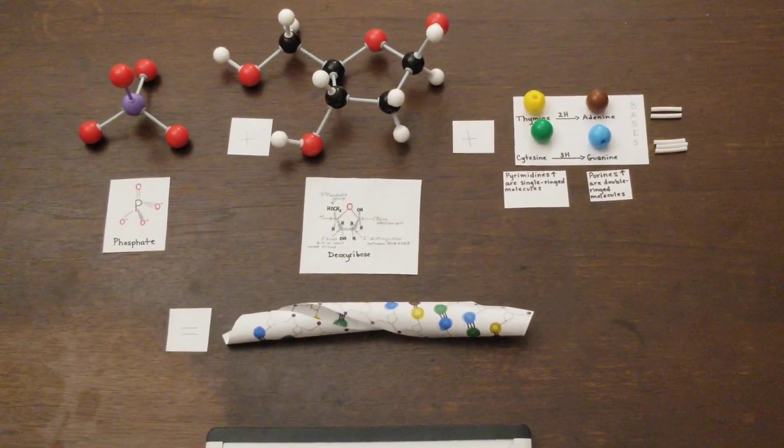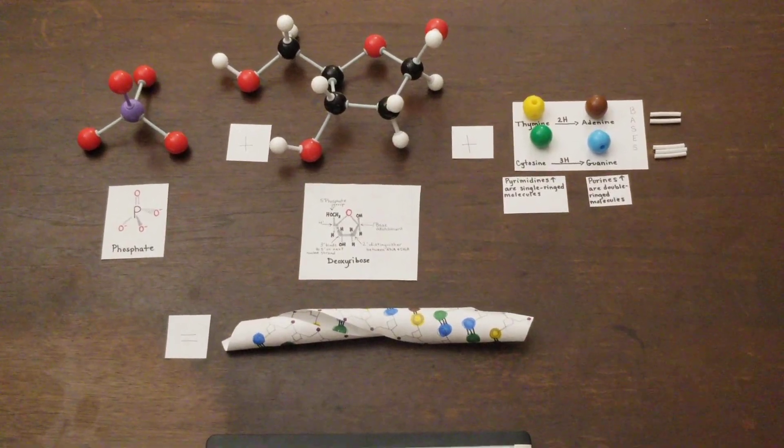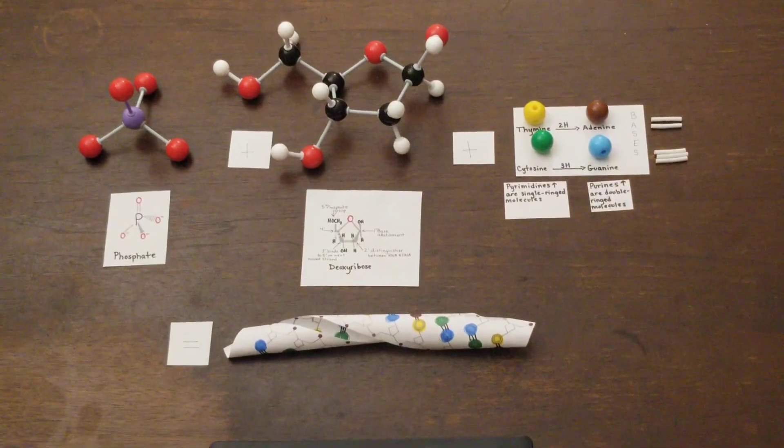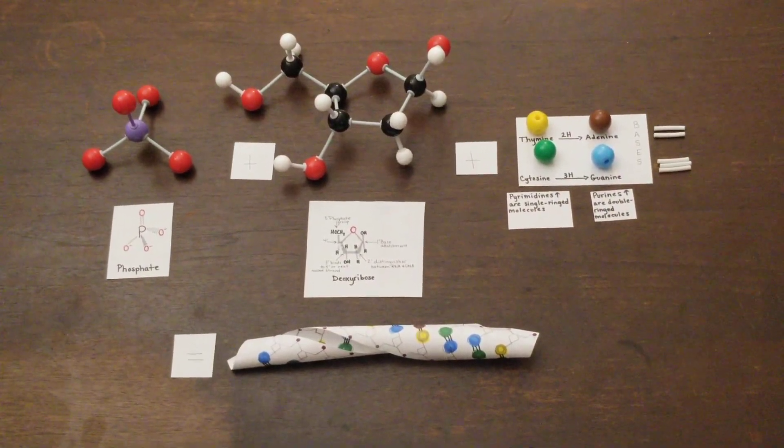The helical nature of DNA presents two grooves in the structure, a minor and a major. A major groove allows for ample protein interaction space, while minor grooves allow for less.